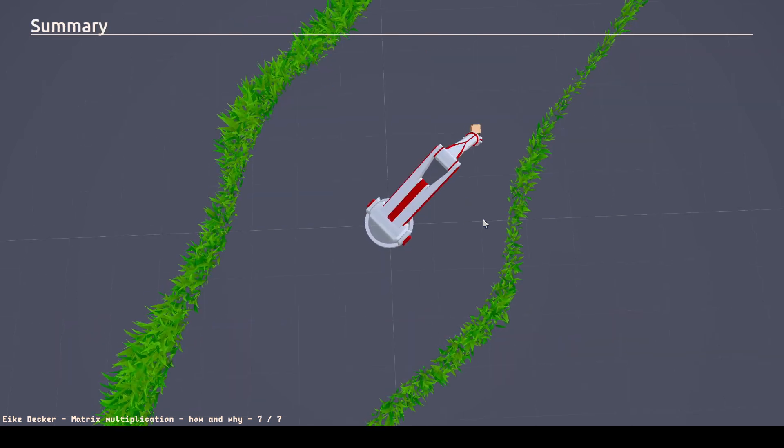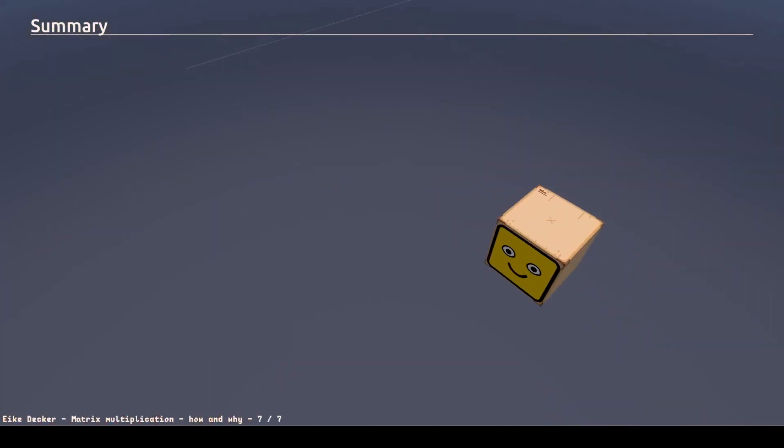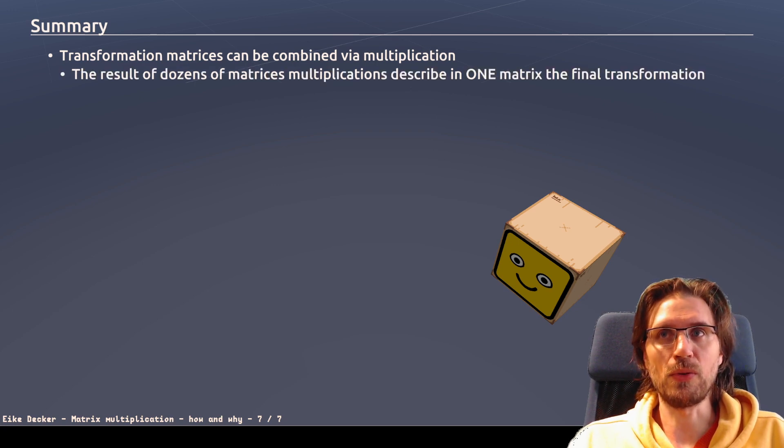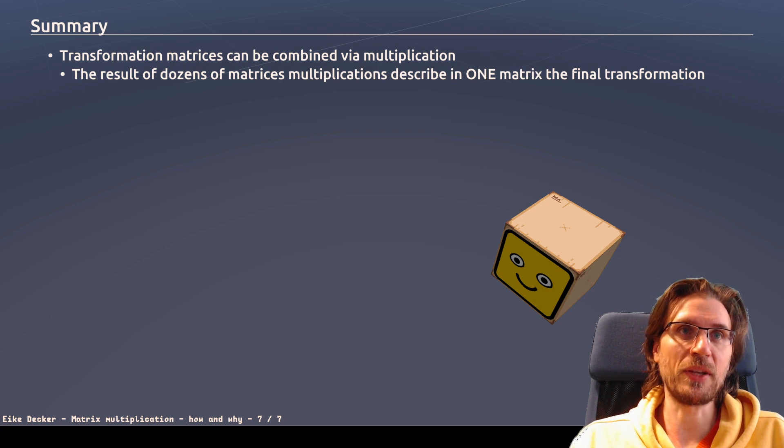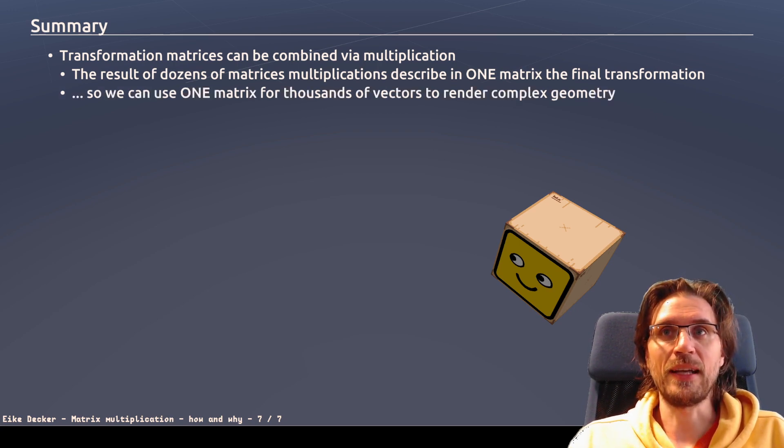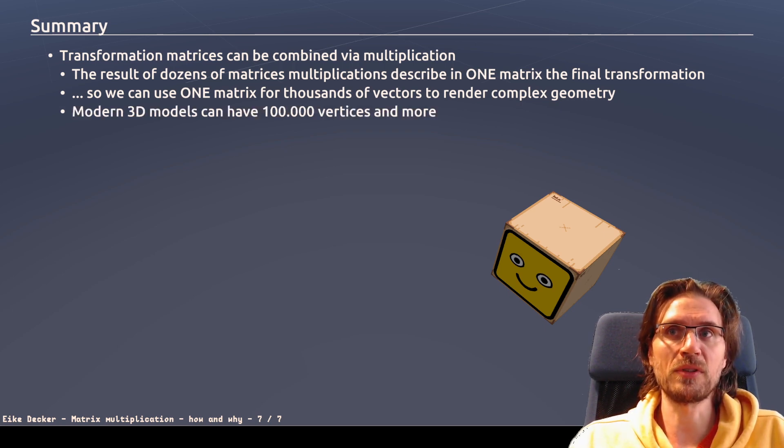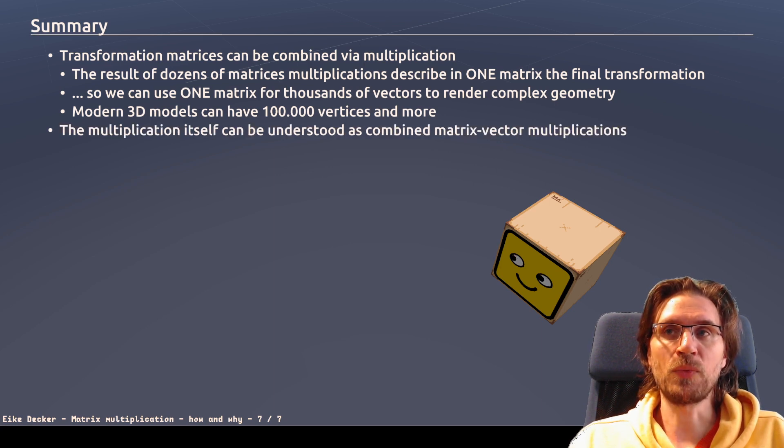So, let's look at the summary. To summarize, what we have seen is that transformation matrices can be combined via multiplication. So, the result of dozens of matrix multiplications describe in one single matrix the final transformation. And this can be used to then transform thousands of vectors to render complex geometry. This is important. Modern 3D models can easily have hundreds of thousands of vertices and more. And this is possible because we have an easy way to combine such transformations. What we have also seen is that the multiplication of matrices can be understood as a combination of matrix vector multiplications.